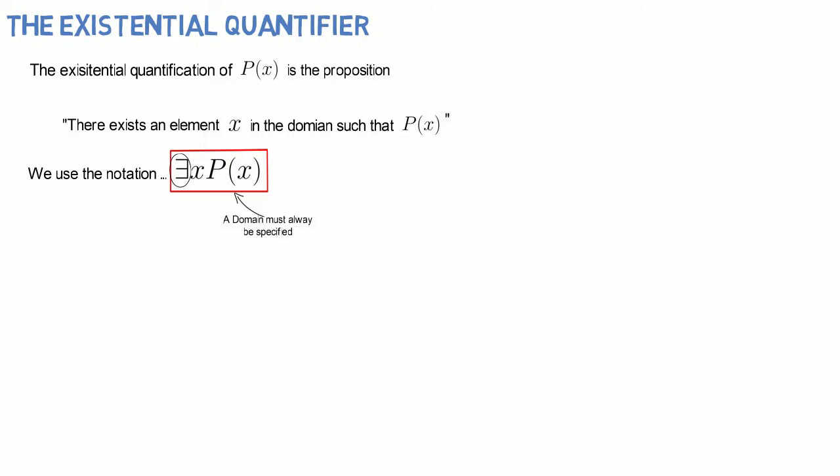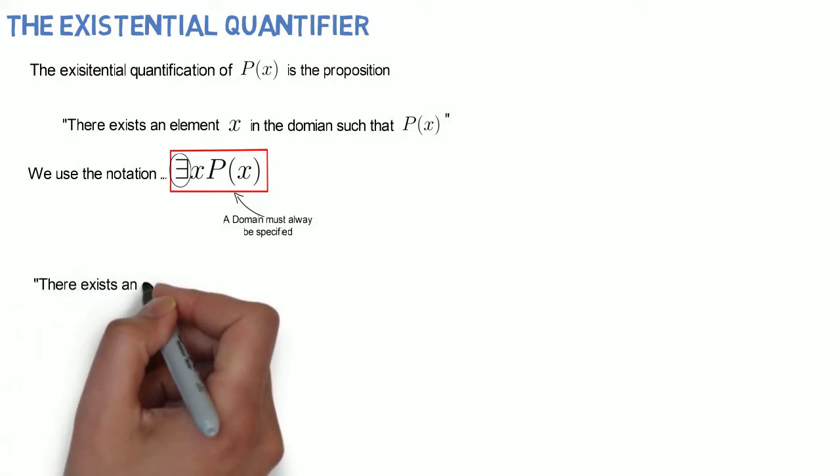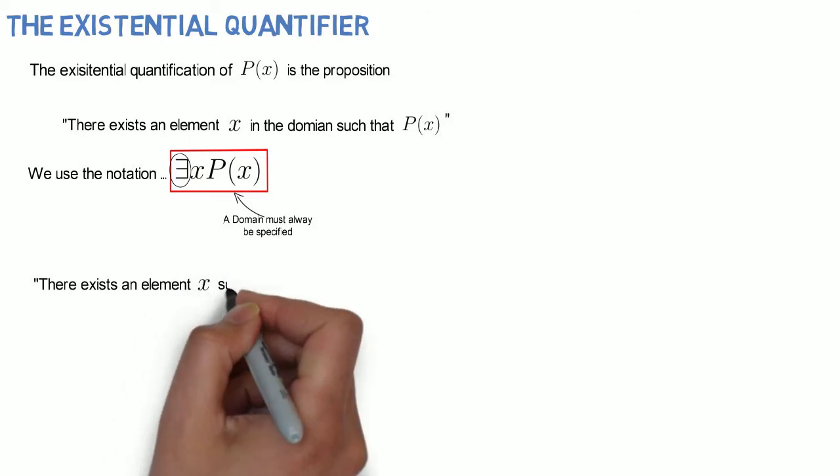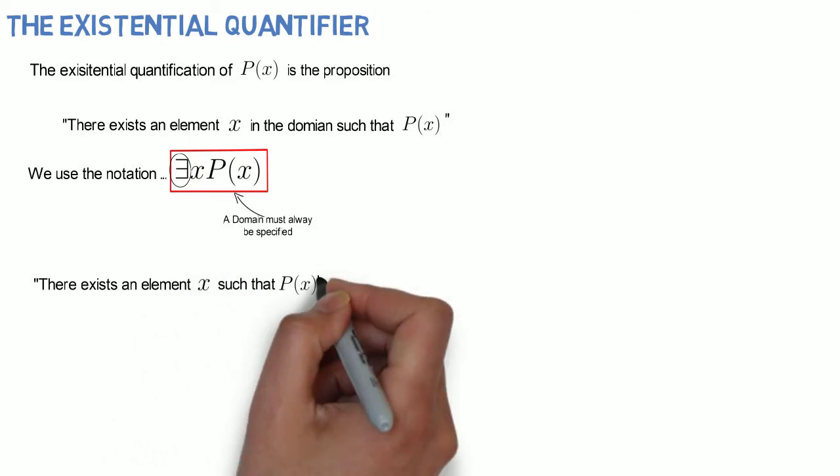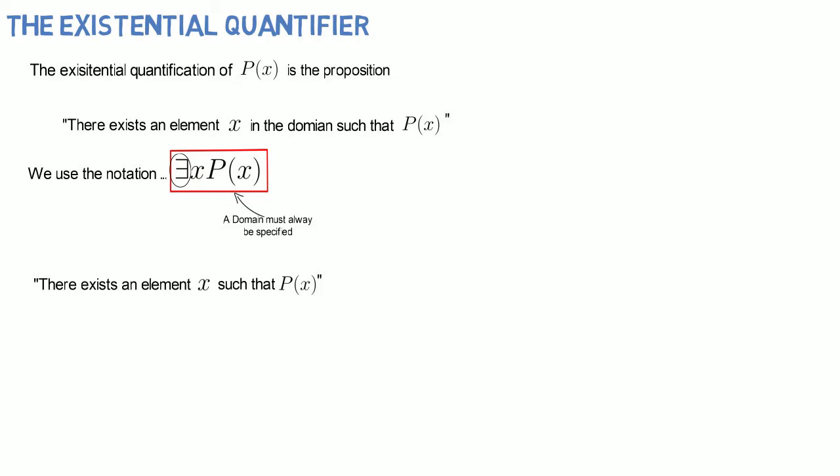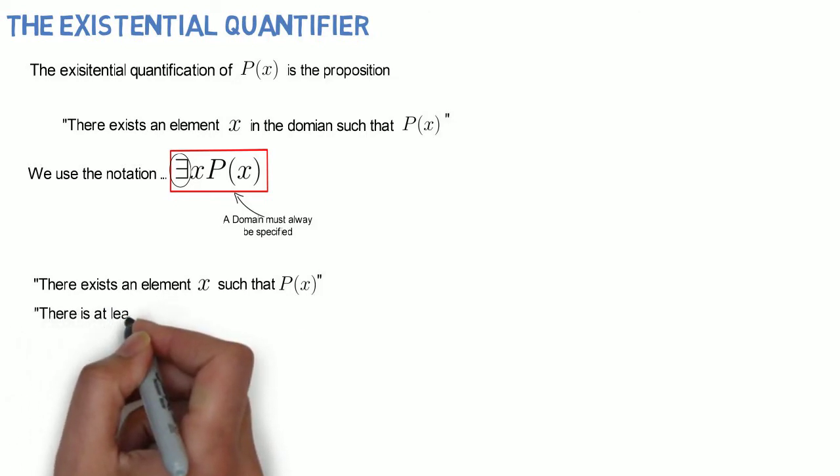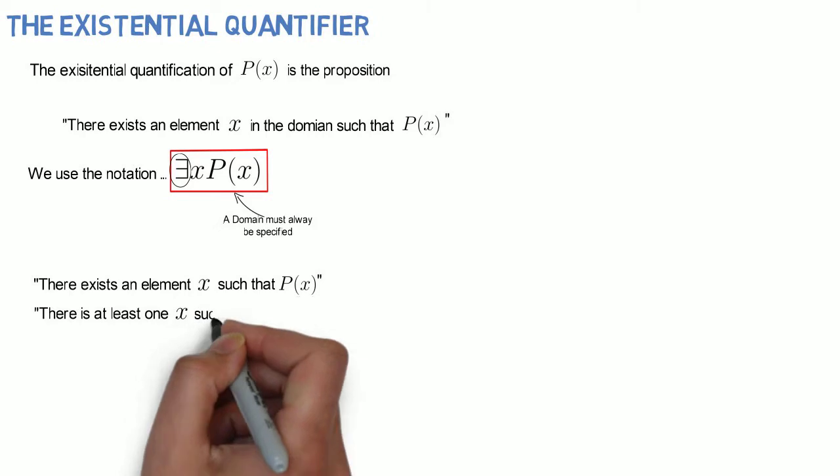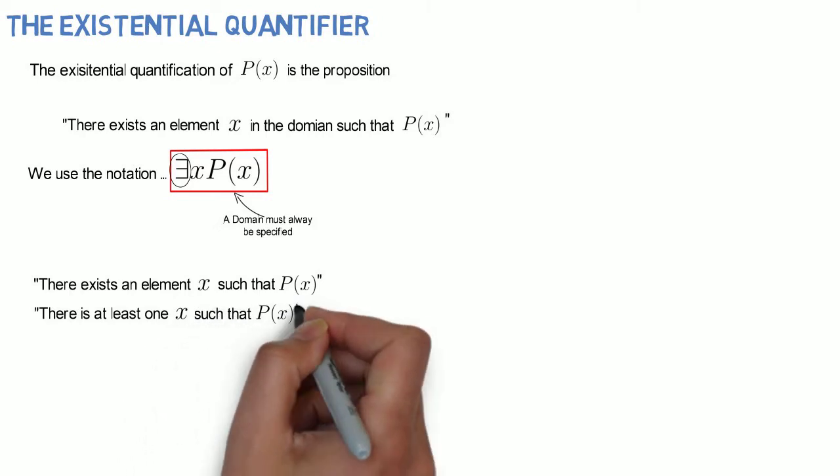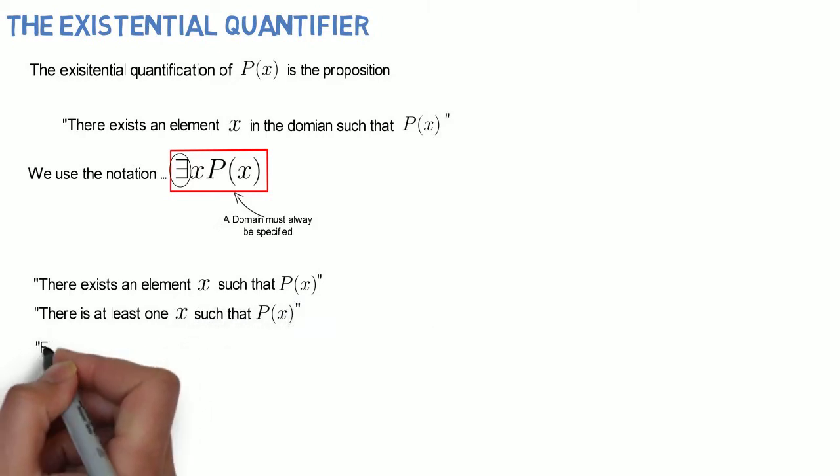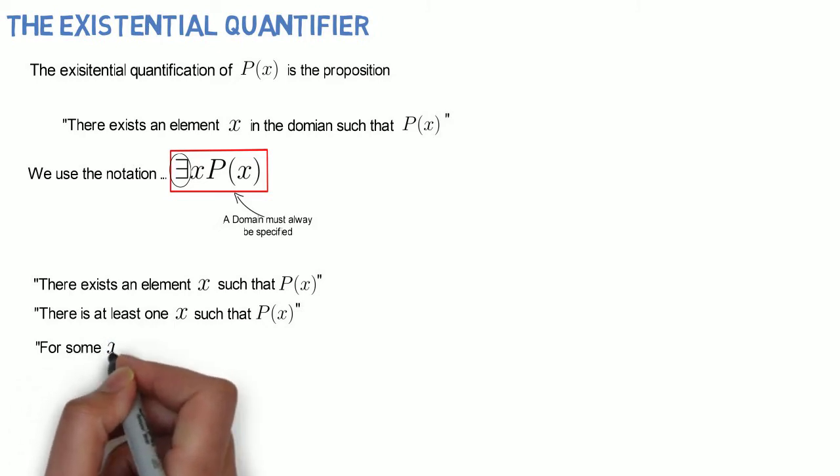We can express existential quantifier in many different ways, such as: there is an x such that P(x), or there is at least one x such that P(x), or even for some x, P(x).